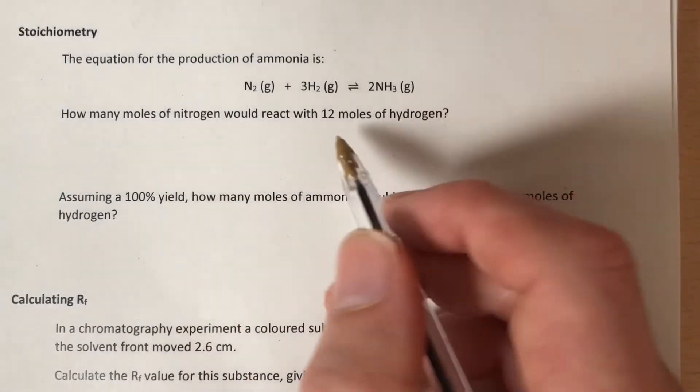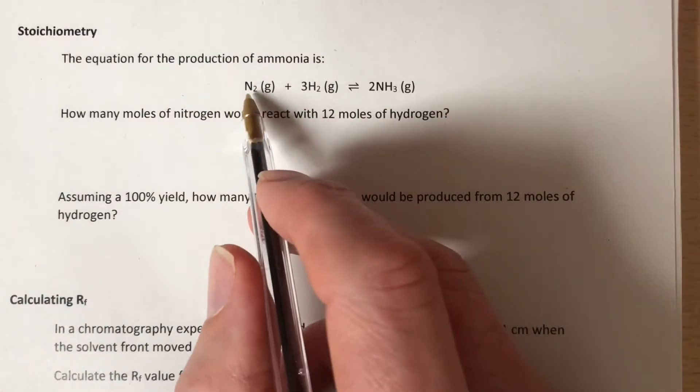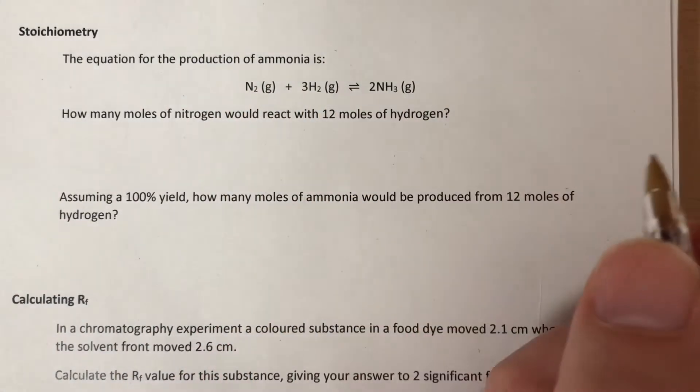Stoichiometry. A couple of questions about stoichiometry here, both around the equation nitrogen reacts with three hydrogen to make two ammonias.